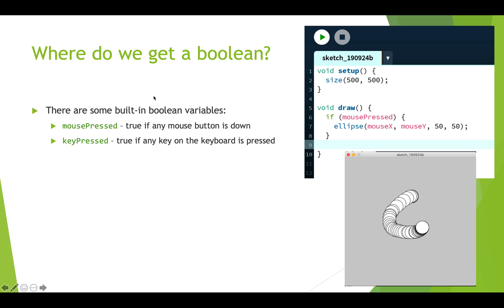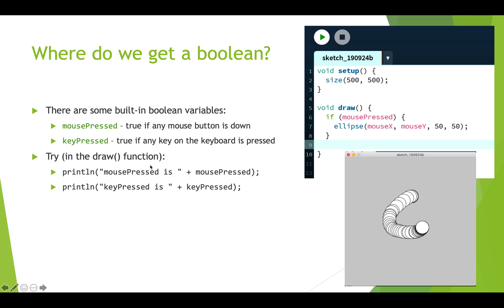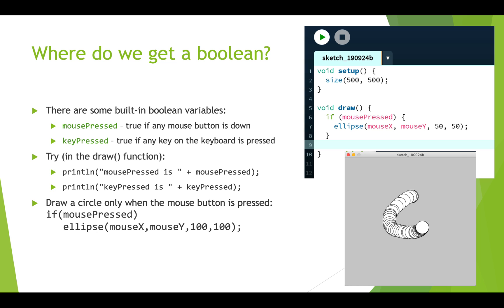You might be wondering where we get boolean variables. We can create our own, but there are also built-in boolean variables. The one we just saw was mousePressed. There's also keyPressed — keyPressed will be true if you are holding down any button on the keyboard; once you let go, keyPressed becomes false. You can play with these in your draw function using println, printing out the value of mousePressed — this concatenates true or false to the string — and you'll see these values change as you press and release the mouse or a key.